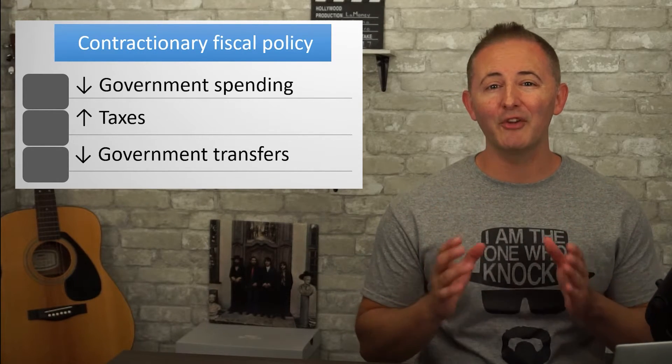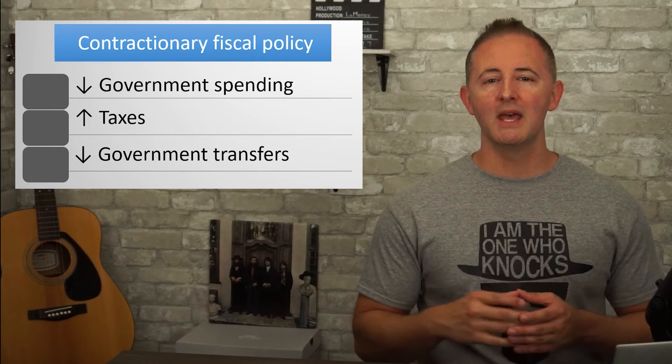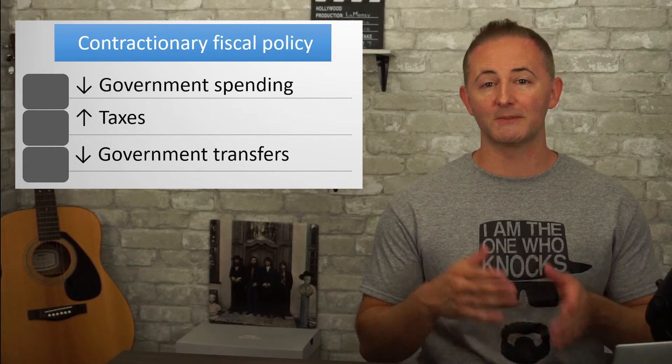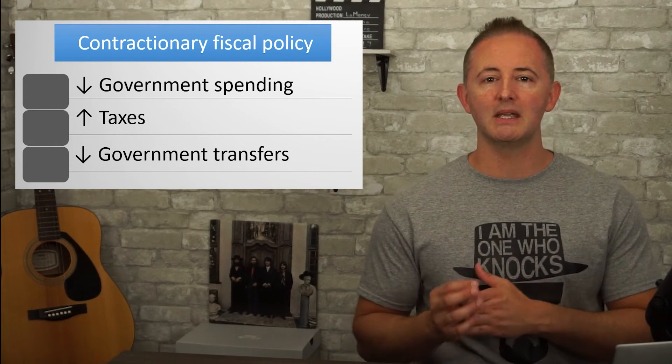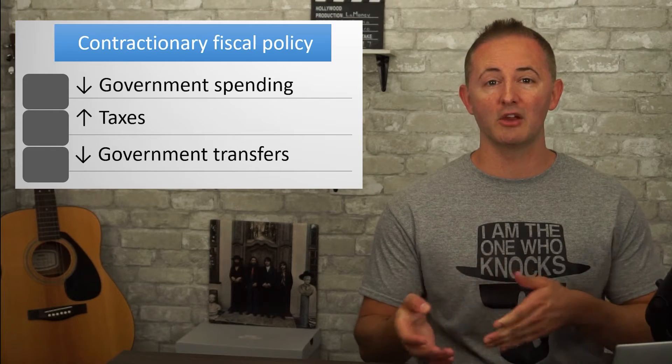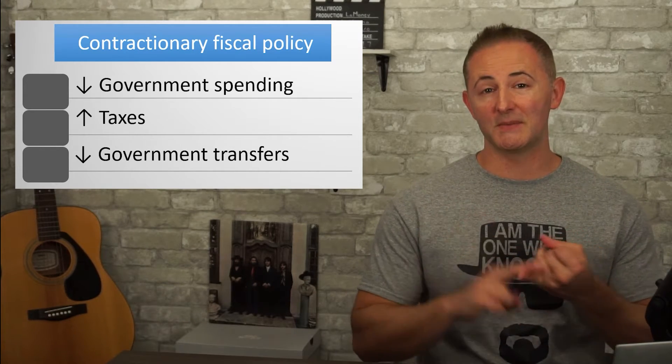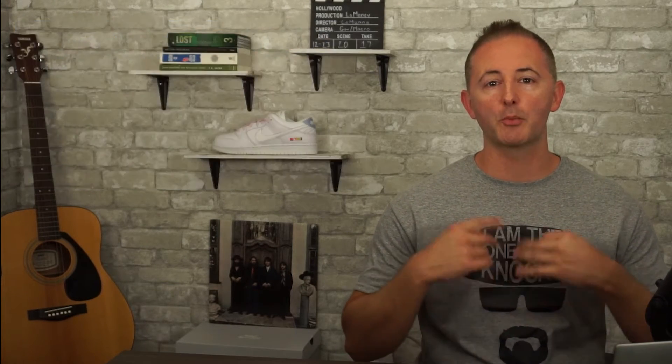Everything said about the multipliers and the requisite size of the necessary changes for expansionary policy is also true for contractionary policy. So if the changes in spending, taxes, or transfers are properly sized, the contractionary fiscal policy will bring the economy back to the LRAS, or potential output, eliminating the inflationary gap.